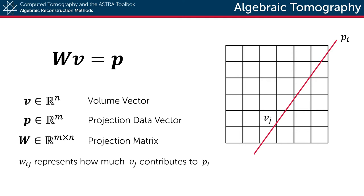Now each row of this projection matrix corresponds to a certain ray that goes through the volume to a certain detector cell, and each column of this projection matrix corresponds to a certain voxel in the volume. Each element wij then effectively represents how much voxel j contributes to the measurement i.